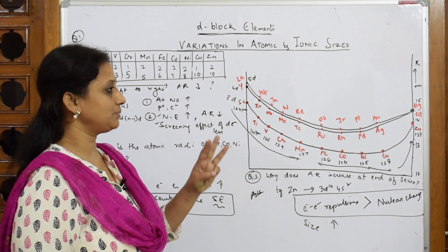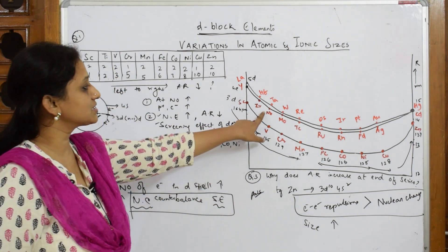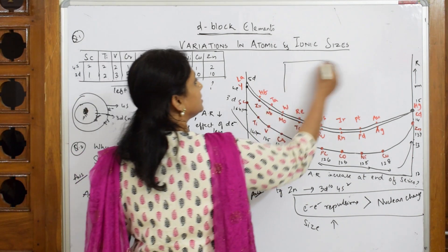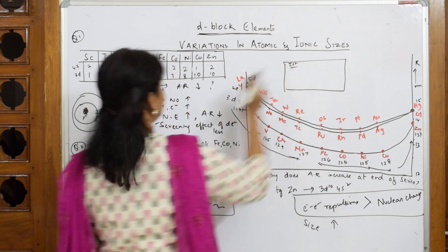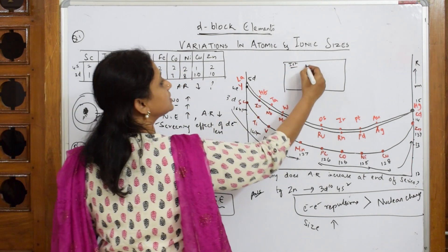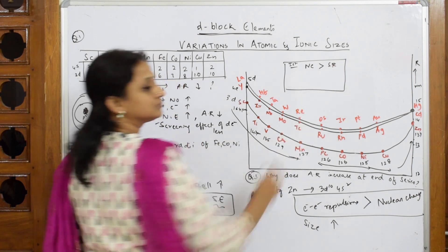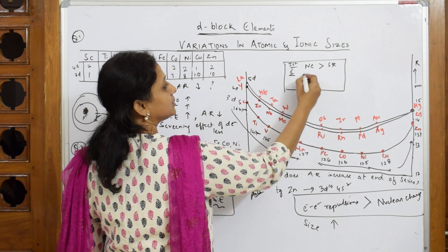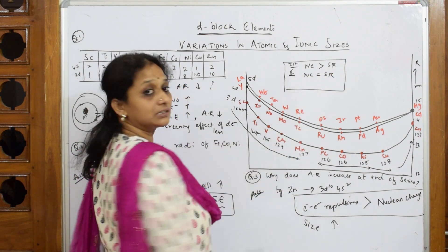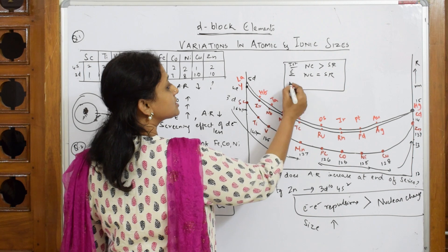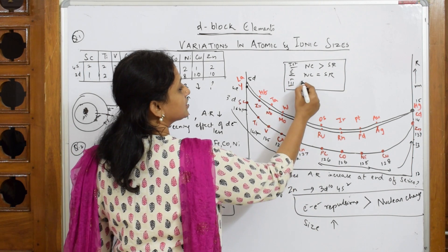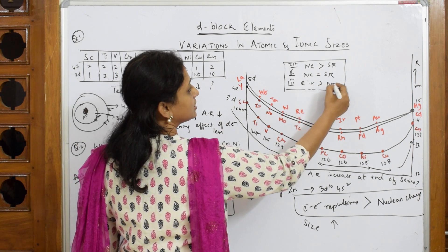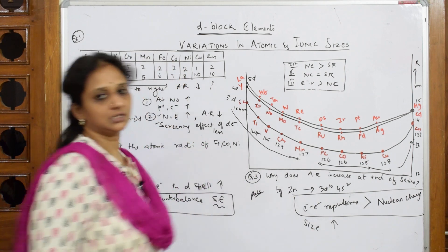To summarize the three important cases from this graph: in the first part of the series, nuclear charge dominates over screening effect, so size decreases. In the midway portion, nuclear charge and screening effect counterbalance each other, so size remains similar. In the last part of the series, electron-electron repulsion dominates over nuclear charge, which becomes insignificant, so size increases.